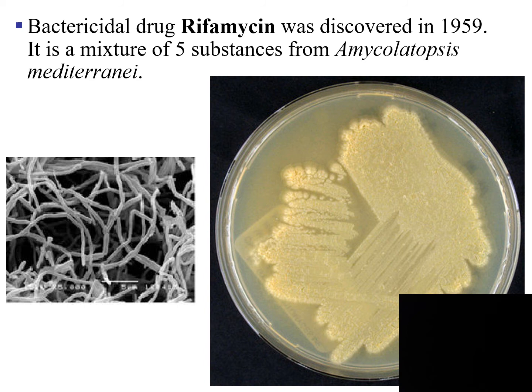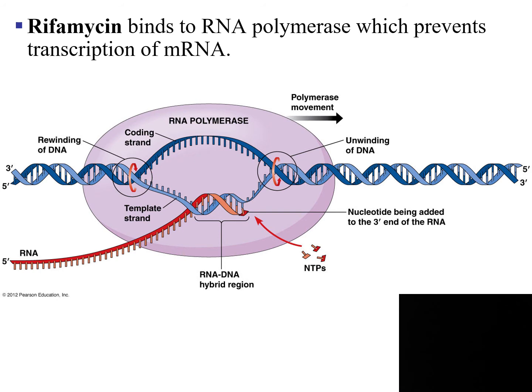The next category of drug that affects bacteria is rifamycin. Rifamycin was discovered in 1959. This drug is a mixture of five substances taken from this microorganism called Amycolatopsis.